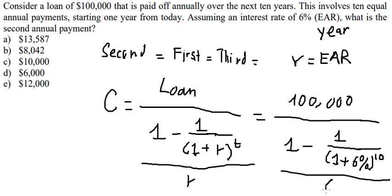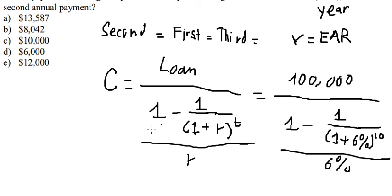Over 6%, we calculate this and get about $13,587. Now we choose answer A.